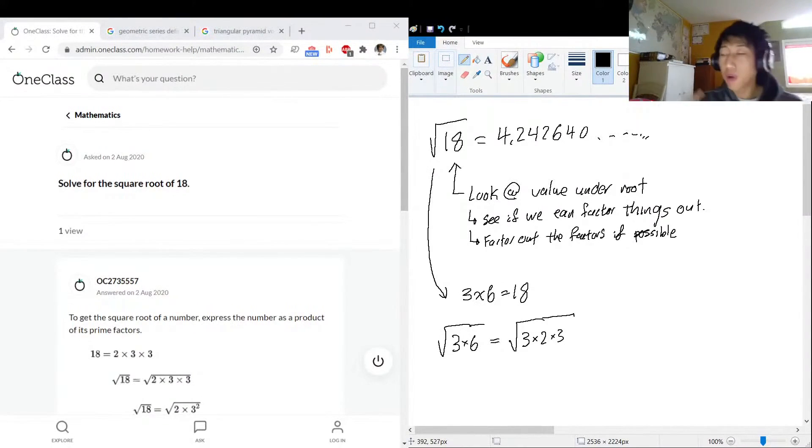Now, when we get all of the terms under the root to be prime numbers, essentially we can combine them. Hey, we got two 3s, how about we write them as 3 squared? 3 squared times 2.